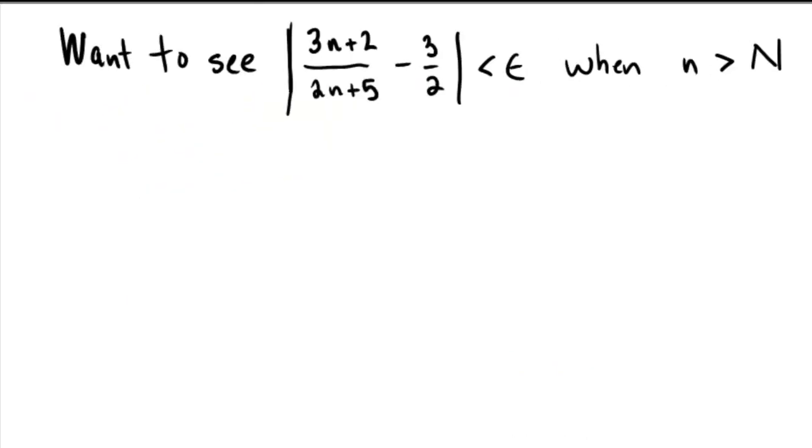Hello, so we want to see if we can make this quantity 3n plus 2 over 2n plus 5 minus 3 halves to be less than epsilon when little n is bigger than capital N. So this is an epsilon n type proof.